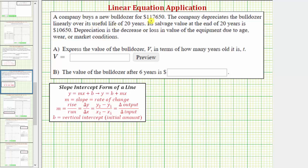The company buys a new bulldozer for $117,650. The company depreciates the bulldozer linearly over its useful life of 20 years. Its salvage value at the end of 20 years is $10,650.